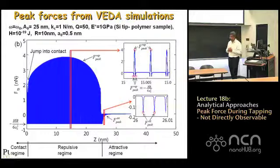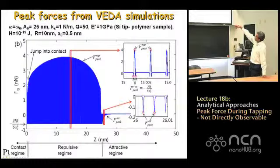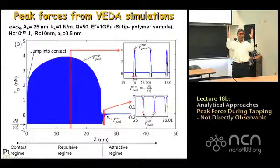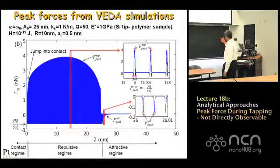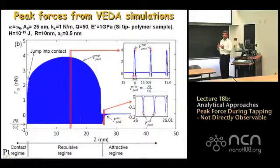Here is a simulation done in VEDA with the parameters shown on top: spring constant 1 N/m, Q of 50, tapping with DMT contact model on a polymer sample of 1 GPa, tip radius 10 nm, initial amplitude 25 nm. What's plotted is the history of tip-sample interaction force as a function of Z as you bring the oscillating cantilever close to the surface. Initially, you see a train of inverted pulses — the attractive regime. We call the most negative value F attractive peak.